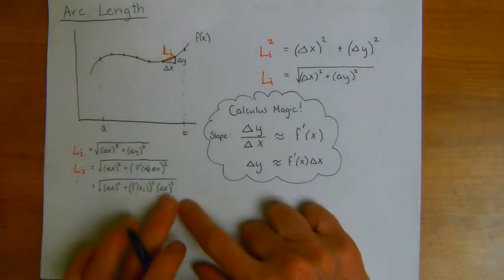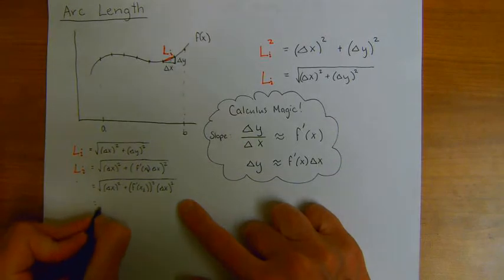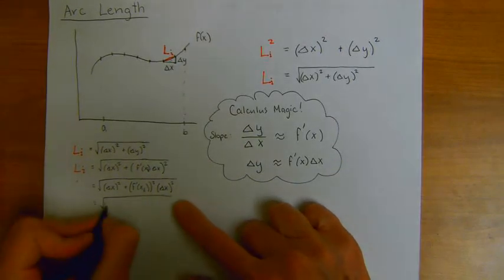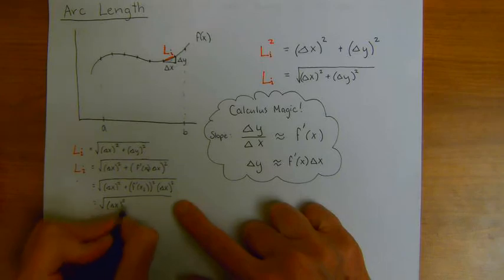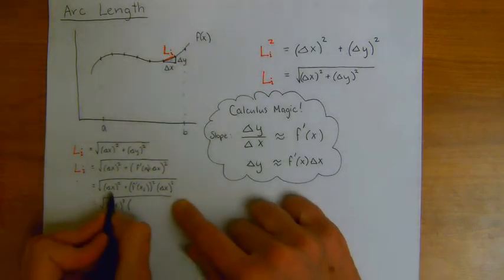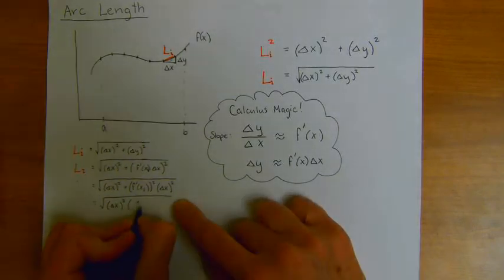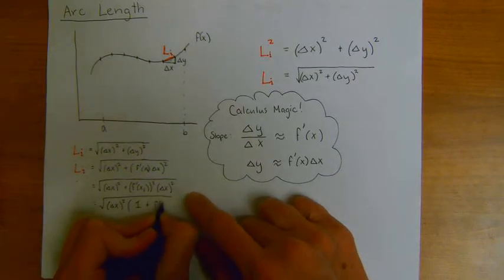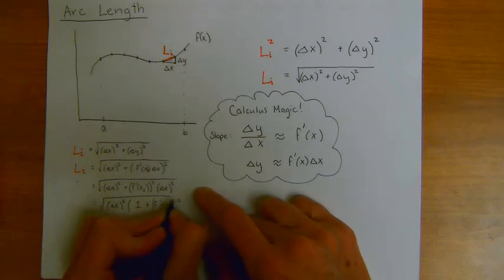So there's a delta x squared term in each of these that I can factor out. It still stays under the radical, but this becomes delta x squared times, well, this is really just a 1 plus f prime of x sub i quantity squared.